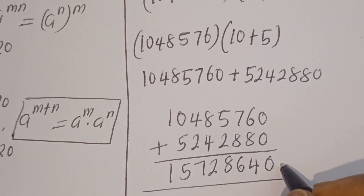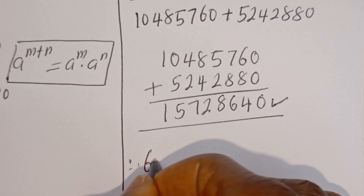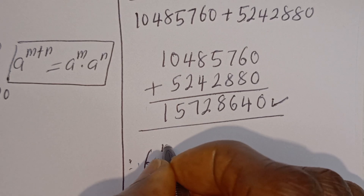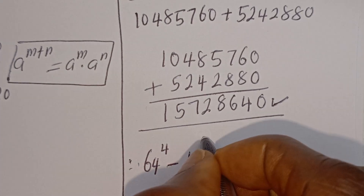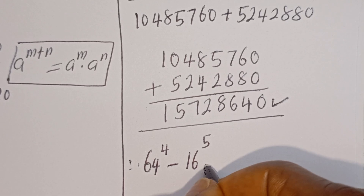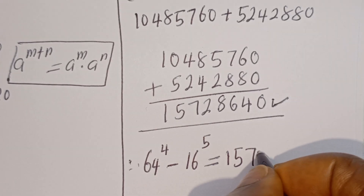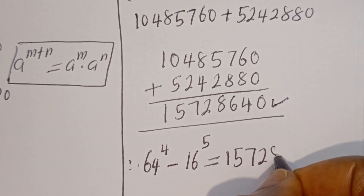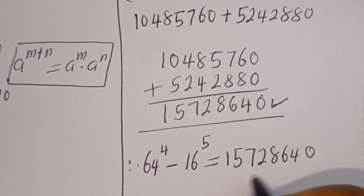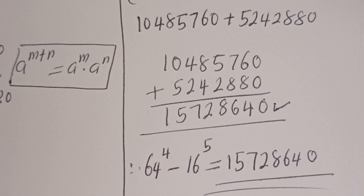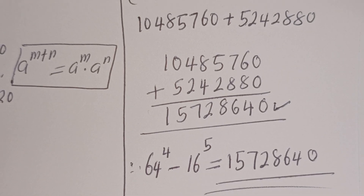And this is the final answer. Therefore, 64 to the power of 4 minus 16 to the power of 5, without using a calculator, is equal to 15,728,640. I hope you enjoyed the video. Thank you for watching — please don't forget to like, share, comment, and subscribe to my channel. Bye!